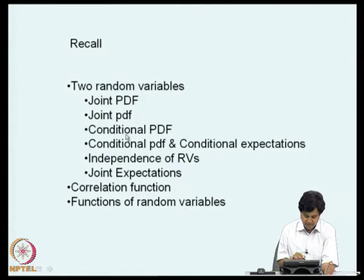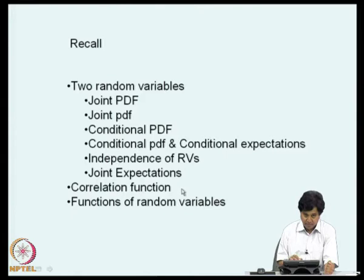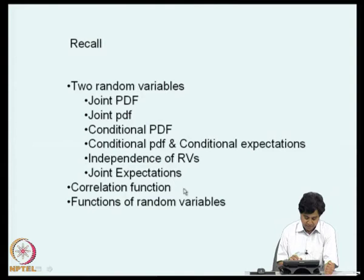Based on the properties of the joint probability density function, we could define joint expectations, joint characteristic functions, joint moment generating functions, and so on. One such characteristic discussed in the last lecture was the correlation function. We showed that the correlation coefficient is bounded between minus 1 and plus 1, with the bounds corresponding to a linear relationship between x and y, and r equal to 0 implying uncorrelatedness. If two random variables are independent, they are automatically uncorrelated.